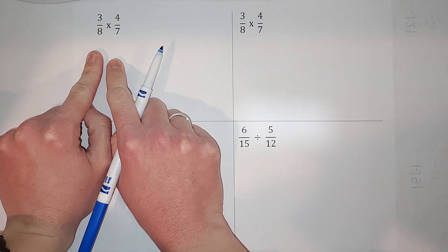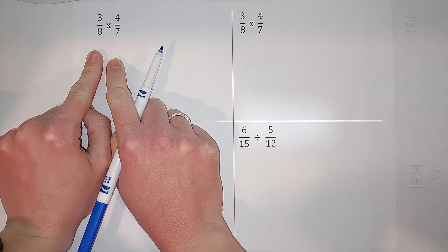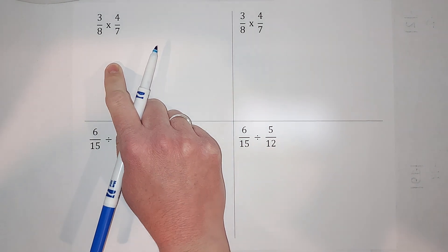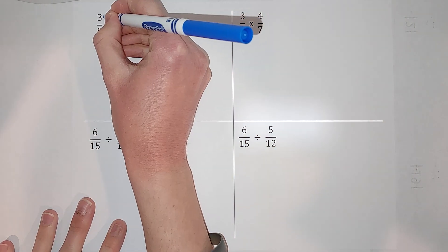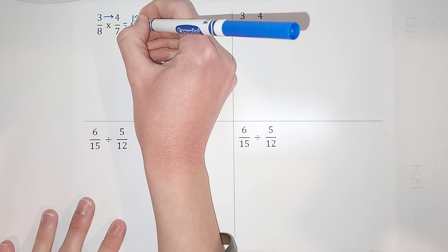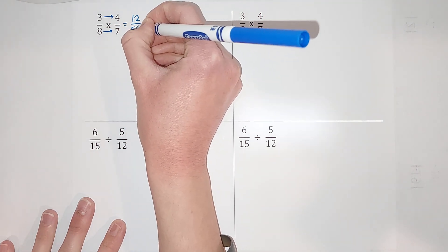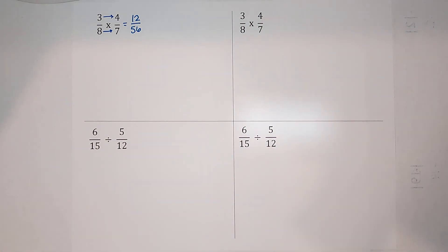When we multiply fractions, guess what guys, the denominators don't have to be the same. We don't have to worry about it. We just multiply straight across. So 3 times 4 gives me 12, right. 8 times 7 gives me 56. Guess what, we need to simplify it, but that's it.